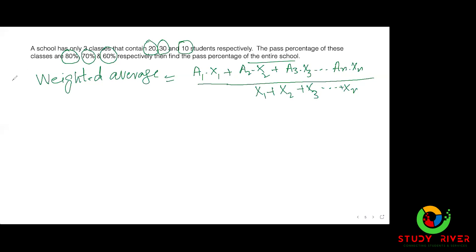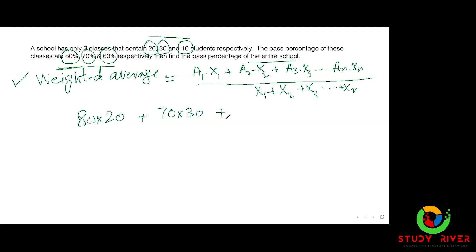اب یہ formula آپ کو پتا ہونا چاہیے کہ یہ لگنا ہے۔ A کیا ہے؟ یہ آپ کی average ہے جو یہاں دی ہوئی ہے۔ اور X کیا ہے؟ یہ آپ کا N ہے۔ تو A1 کیا ہے؟ 80 average ہے، multiply اس کی تعداد 20 سے۔ Plus دوسرا: 70 × 30۔ Plus تیسرا: 60 × 10۔ (Now you should know that this formula is to be applied. What is A? It is your average given here. And what is X? That is your N. So A1 is 80, multiply by its count 20. Plus second: 70×30. Plus third: 60×10.)